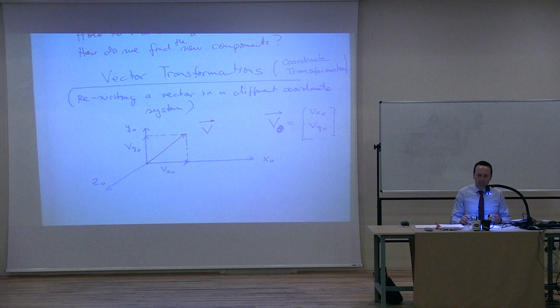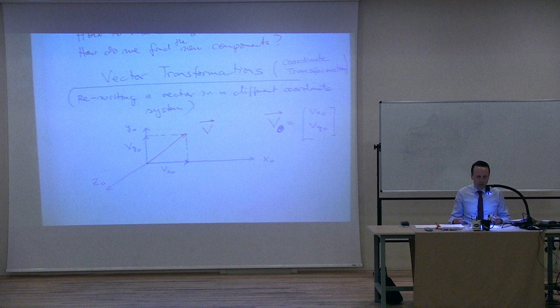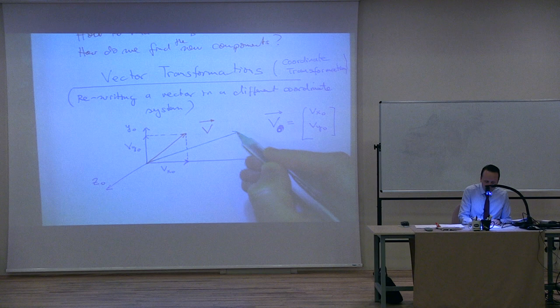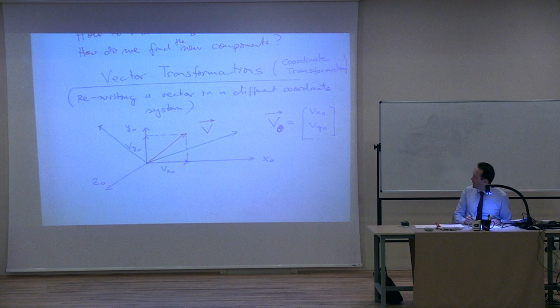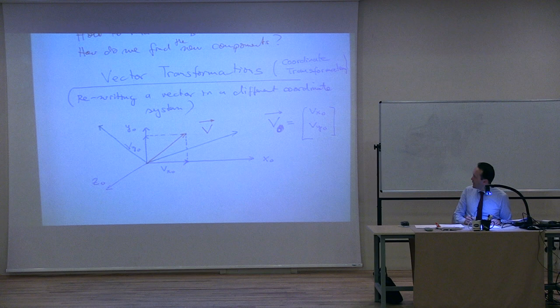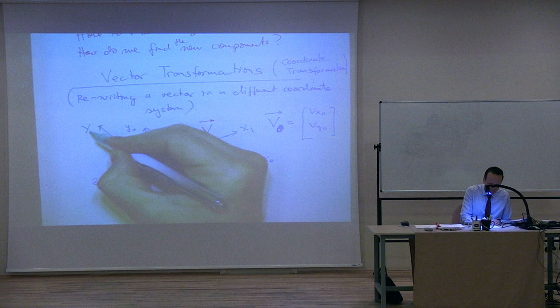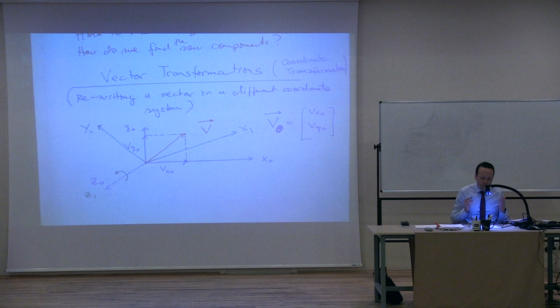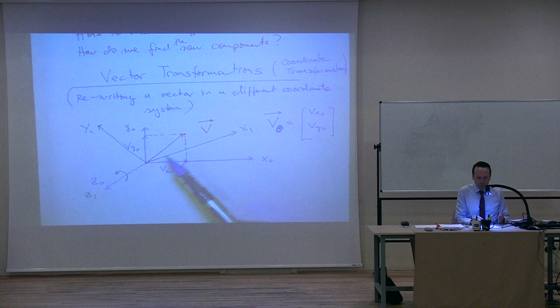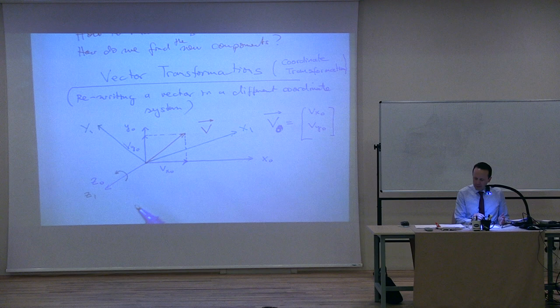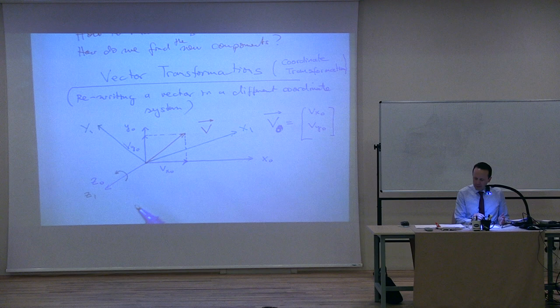Now I would like to rewrite this vector in another coordinate system. Specifically, I am going to rotate the coordinate system and call the new one x₁ and y₁. This is a rotation around the z-axis, so z₁ still points the same way. All I want to do is take the red vector — which I have not moved — and rewrite it in the green coordinate system x₁, y₁ instead of the blue one.